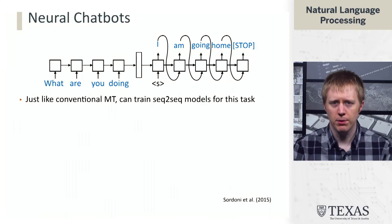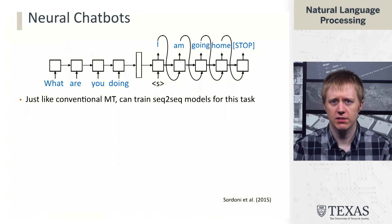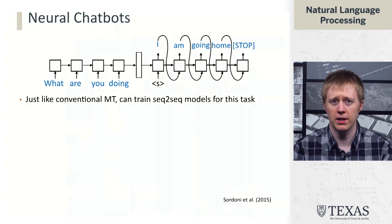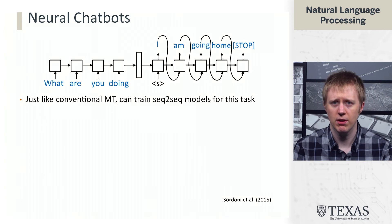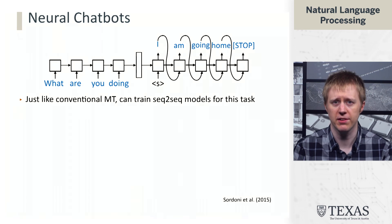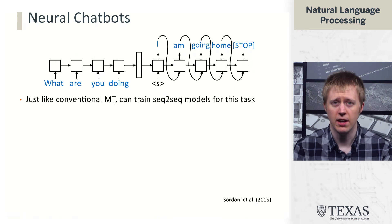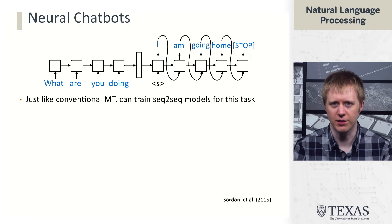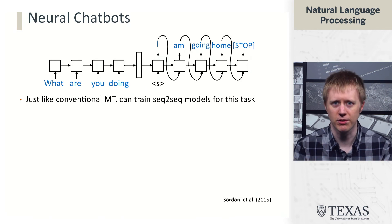We can approach this not using a phrase-based system like we saw from some of the previous work, but instead using a sequence-to-sequence model. So we can take an input like 'what are you doing' and it seems conceivable that we should be able to train an LSTM to map this to a response like 'I am going home,' if we see enough data with the right kind of responses.